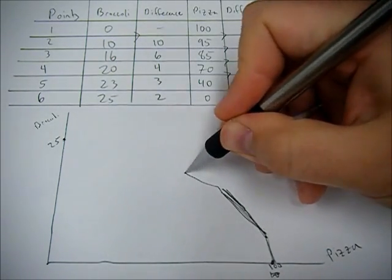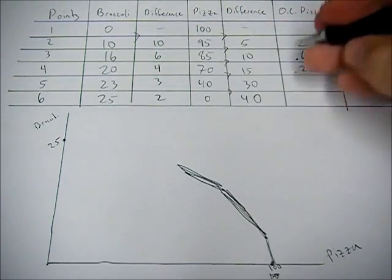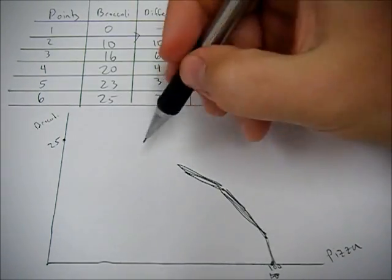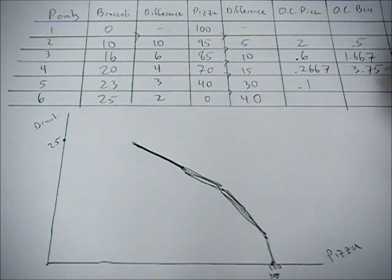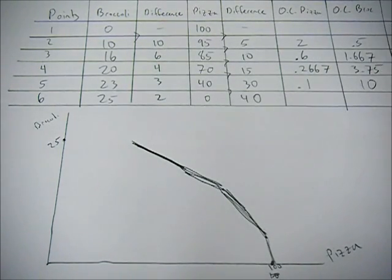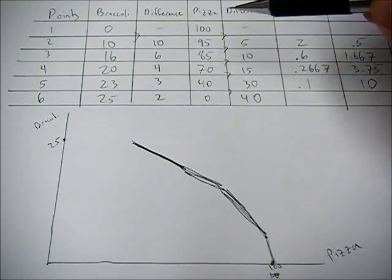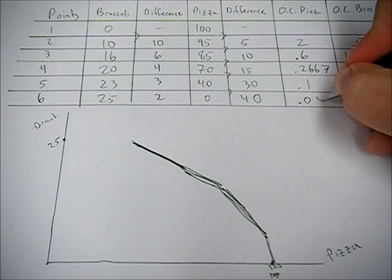The inverse of that is 3.75. So 0.2667 is a little narrower. Next, 3 over 30 gives us 0.1. So we're getting 3 broccoli, but we're having to give up 30 pizza. The inverse of that is going to be 10, the 30 over 3.